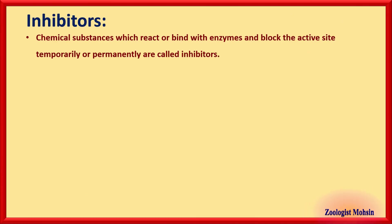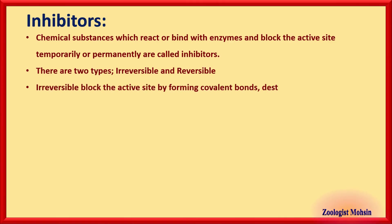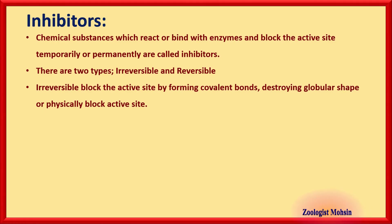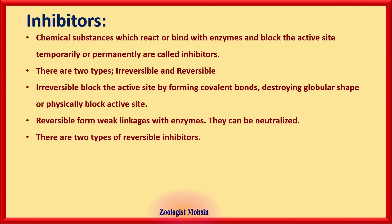Inhibitors are chemical substances that react or bind with enzymes and block their active sites temporarily or permanently. There are two types: irreversible inhibitors, which block the active site completely by forming covalent bonds, destroying the globular shape, or physically blocking the active site; and reversible inhibitors, which form weak linkages with enzymes that can be broken and detached.